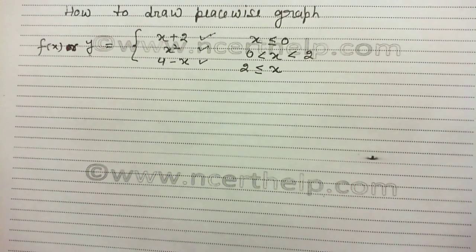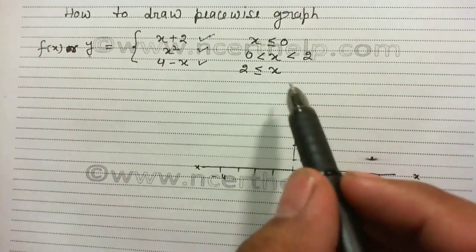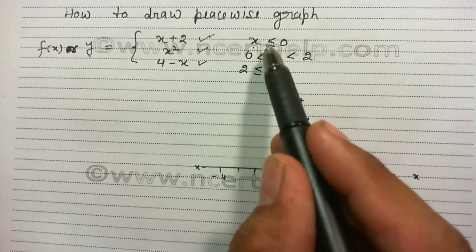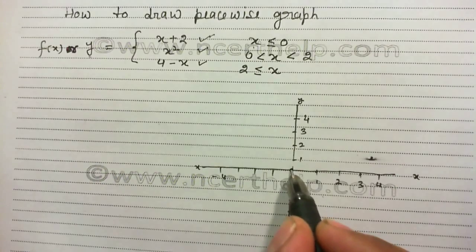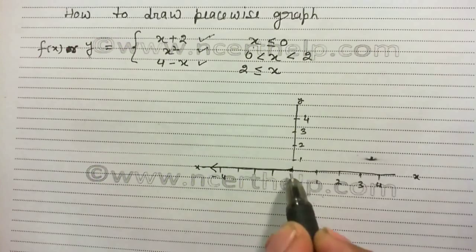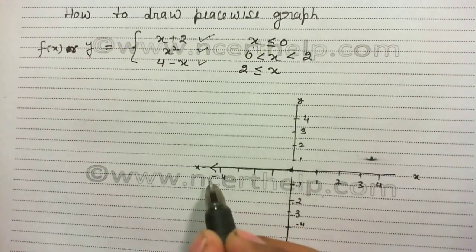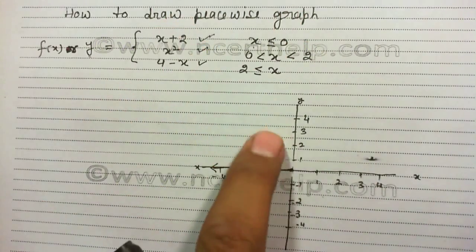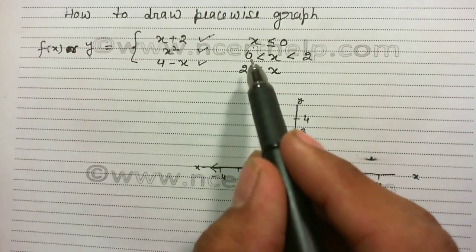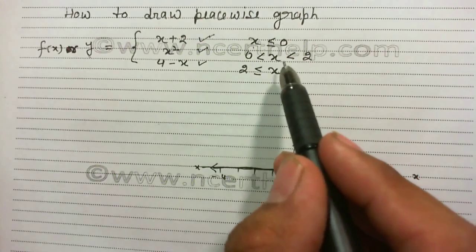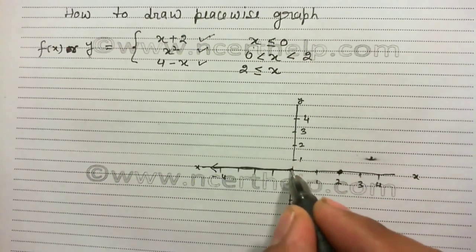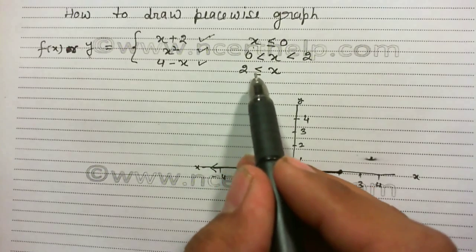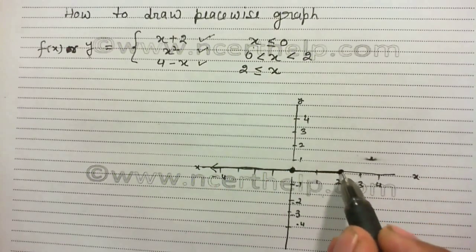First we will draw the graph of the function. In the first piece, x is less than or equal to 0, so I will draw the graph of this piece along the negative x-axis, because in the negative x-axis x is less than or equal to 0. In the second piecewise function, the value of x is greater than 0 and less than 2, so the second graph will be drawn between 0 and 2. And in the third part, x is greater than or equal to 2, so the third graph will be drawn in that direction.